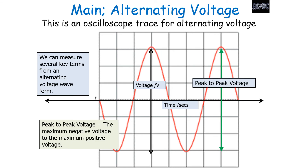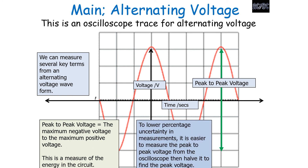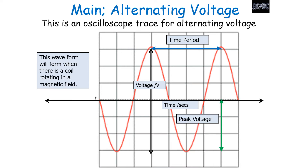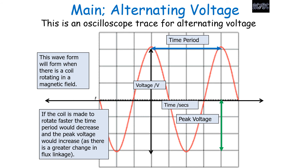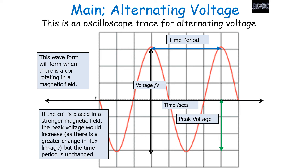The next key term is the peak-to-peak voltage — the maximum negative voltage to the maximum positive voltage — which is also a measure of the energy of the circuit. To lower percentage uncertainties in measurements, it's easier to measure the peak-to-peak voltage from the oscilloscope and then halve it to find the peak voltage. If the coil rotates faster, the time period decreases but the peak voltage increases due to greater change in magnetic flux linkage. If the coil is placed in a stronger magnetic field, the peak voltage increases but the time period remains unchanged.